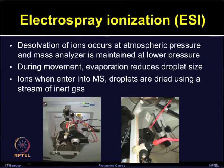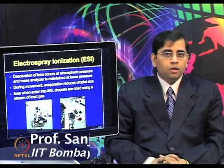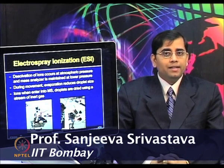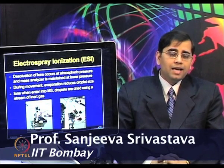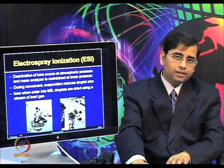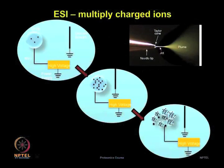During movement, evaporation reduces the size of droplets, which then split into smaller charged droplets. When ions enter inside the mass spectrometer, the droplets are dried using a vacuum of inert gas, which results in gas-phase ion acceleration through the analyzer towards the detector. The top panel shows the Taylor cone generation, and the center shows the production of multiple charged ions, which is usually coupled to the MS via real-time liquid separation.